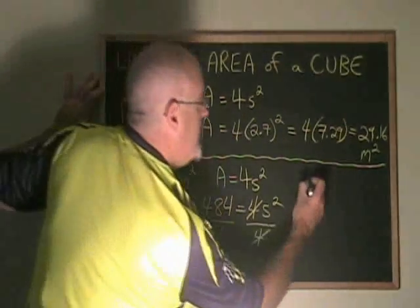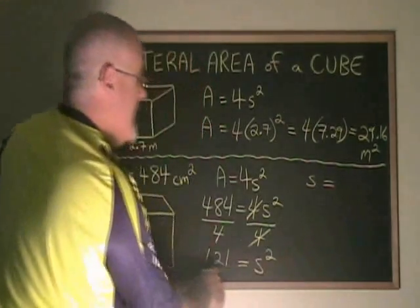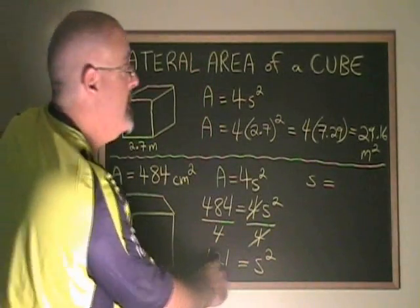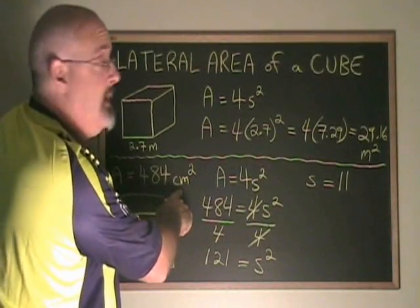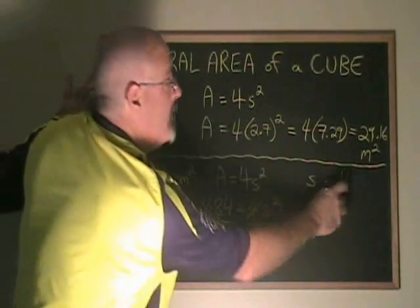The square root of s squared is s. And the square root of 121 is 11. Our original unit was centimeters squared, so our distance unit for side lengths will be centimeters.